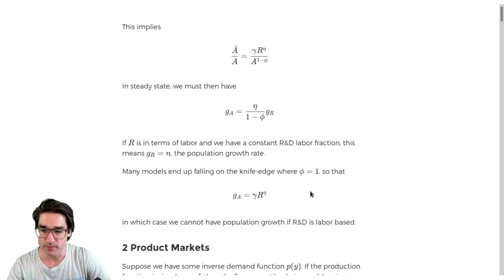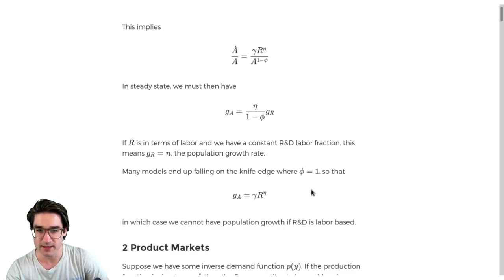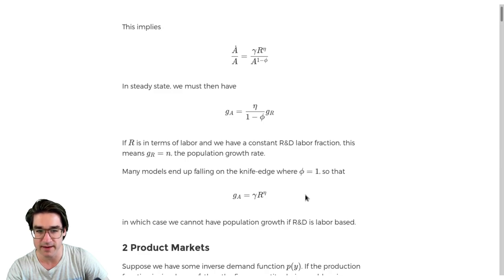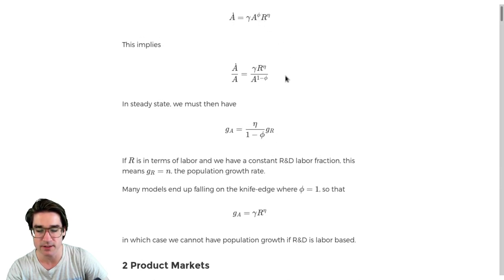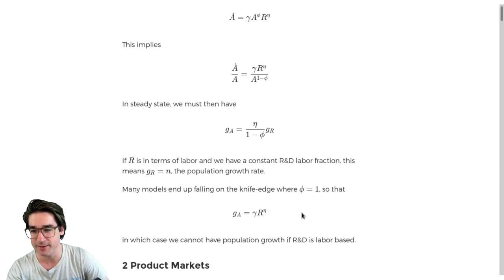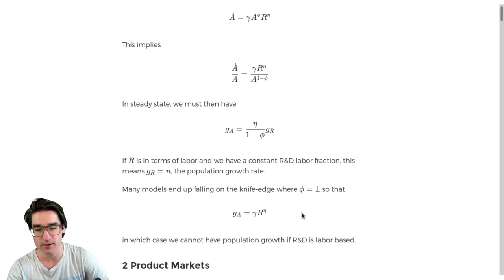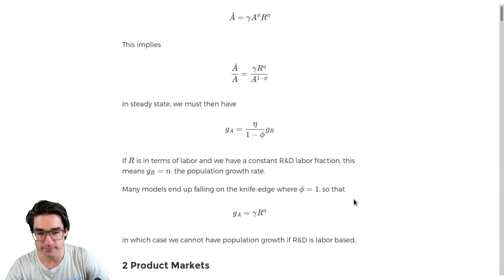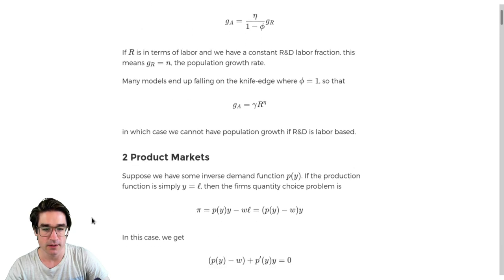That's just a way to classify different models. When we specify our production function for new ideas in later models, we can ask: what's the phi for this model, what's the eta, and what are the implications? The big thing with the Jones taxonomy is that those two facts hold for any phi between zero and one. But when phi equals one, you start being able to influence growth with policy — though the cost is that you can't have population growth.